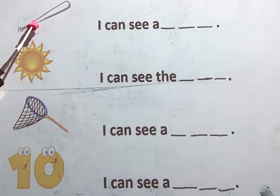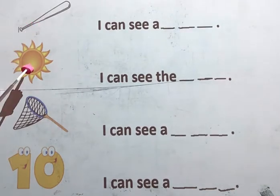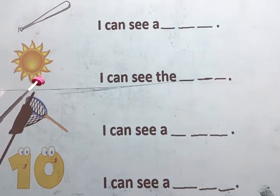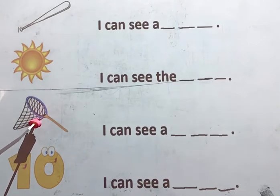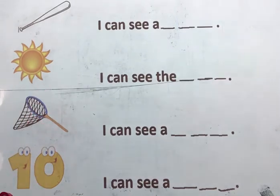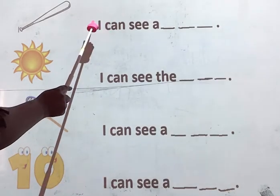So we have bat, sun, net, ten. Now let's go into reading the sentences and writing the missing words. Let's go!